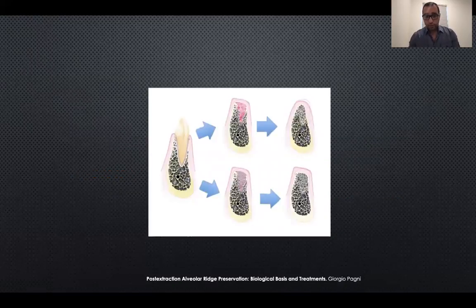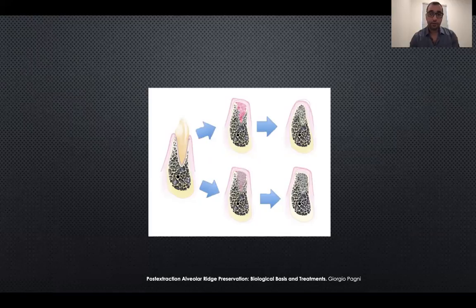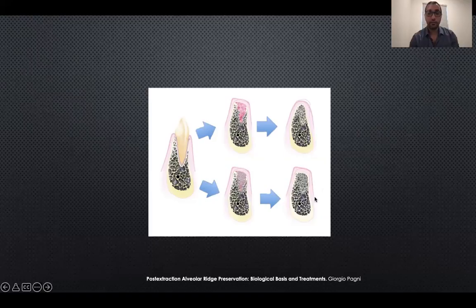After tooth extraction, the area heals with blood clot formation, then bone resorbs — especially on the facial — and we often end up with a pointed ridge. Our goal in socket preservation is to fill the socket with bone and reduce resorption, ending up with a wider ridge that can receive an implant.